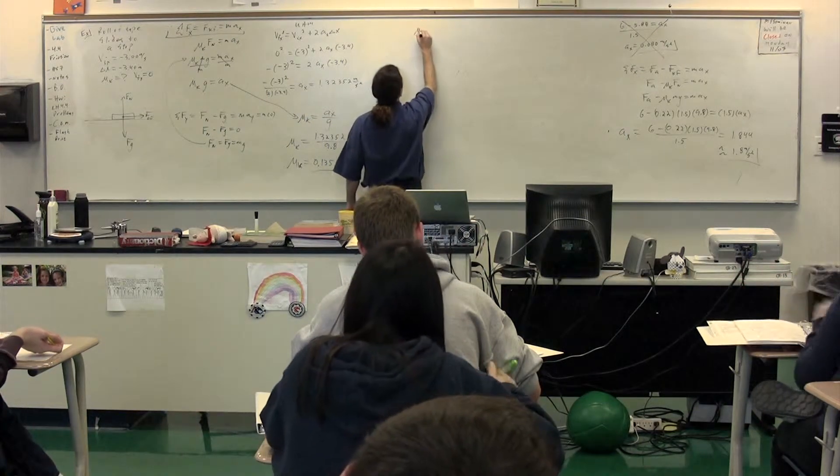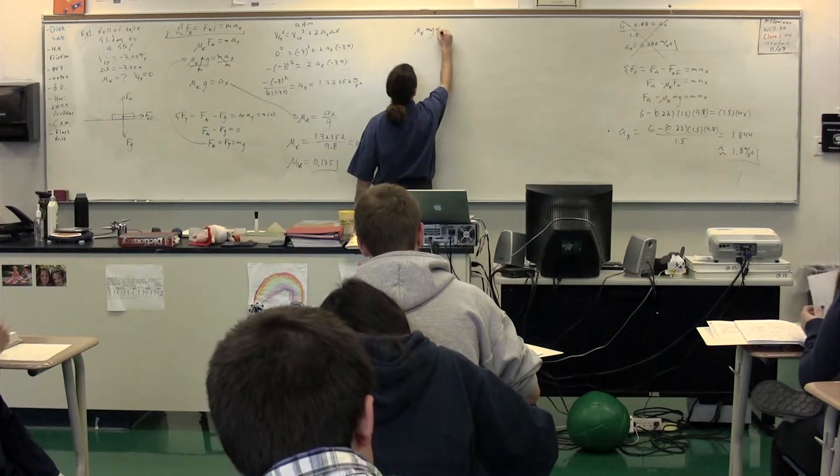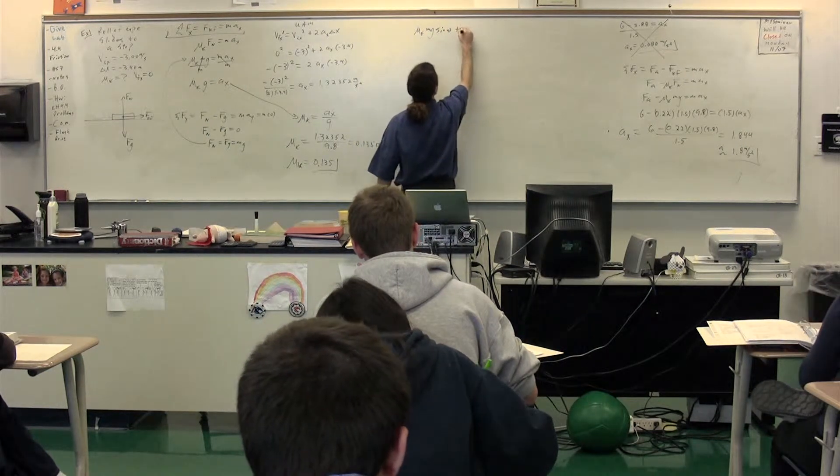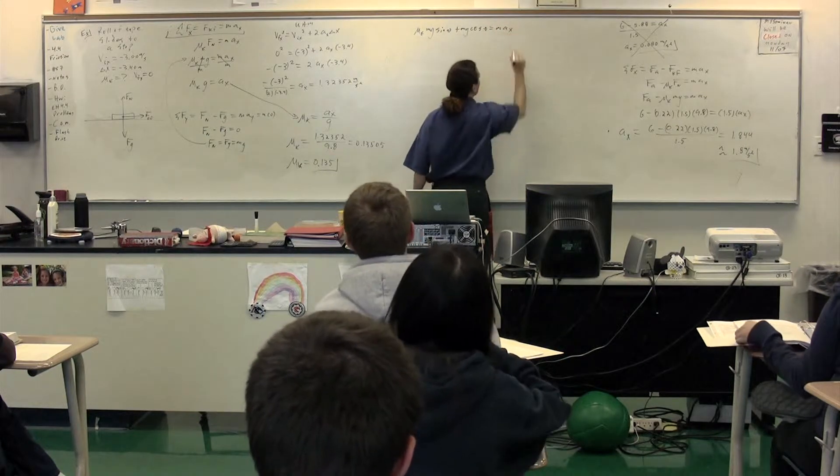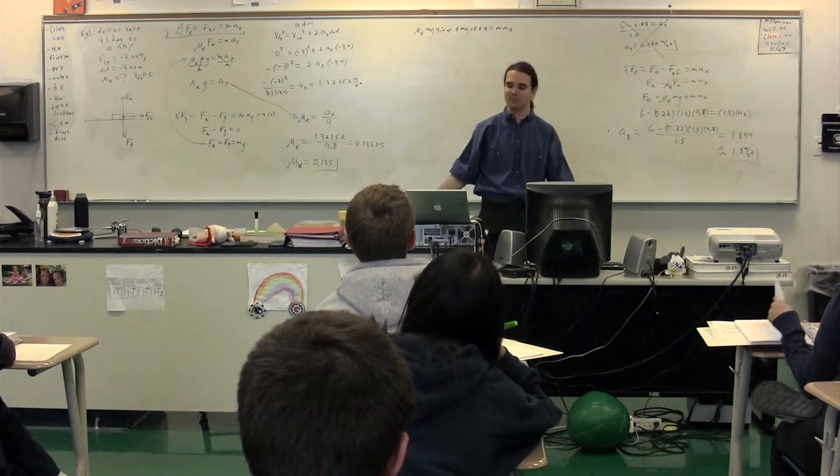I'll put this example down and you get to tell me: mu k, mg times the sine of theta plus mg cosine theta equals mass times the acceleration of the x-direction. Did everyone bring mass to the party?